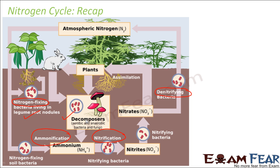Nitrifying and denitrifying bacteria perform the reverse process — they convert ammonia and nitrates present in the soil into nitrates, which are then further converted back into atmospheric nitrogen, completing the cycle. With the help of these nitrifying, denitrifying, and nitrogen-fixing bacteria, nitrogen is managed between the atmosphere and the soil. That is how the nitrogen cycle works.